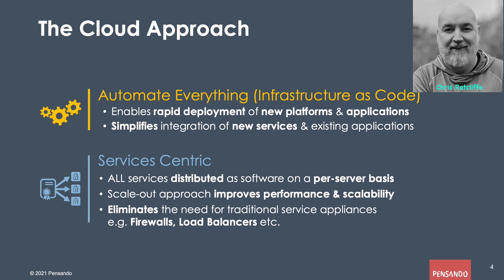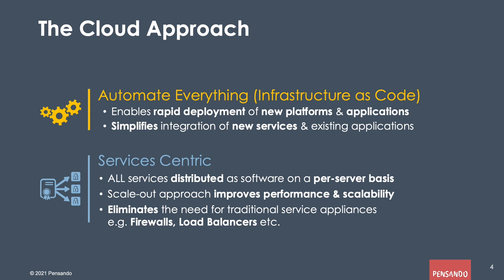So it gives them a true scale-out approach. That improves performance, it obviously improves scalability, but it also eliminates the need for traditional service appliances like firewalls, load balancers, and things like that. When you talk to these guys, one of the things they'll tell you is, every time I have to put something like an appliance into my infrastructure, it introduces complexity, it introduces another management layer, and it introduces latency. So by putting all these services into the server and running them as software, you get much greater flexibility. Then on top of that, you automate everything. Because it's all in software, you can leverage everything with APIs — they term this infrastructure as code. Everything gets automated. It allows them to rapidly deploy new platforms, deploy new applications, change the personality of platforms, and simplifies the integration of new services and existing applications in the same infrastructure.